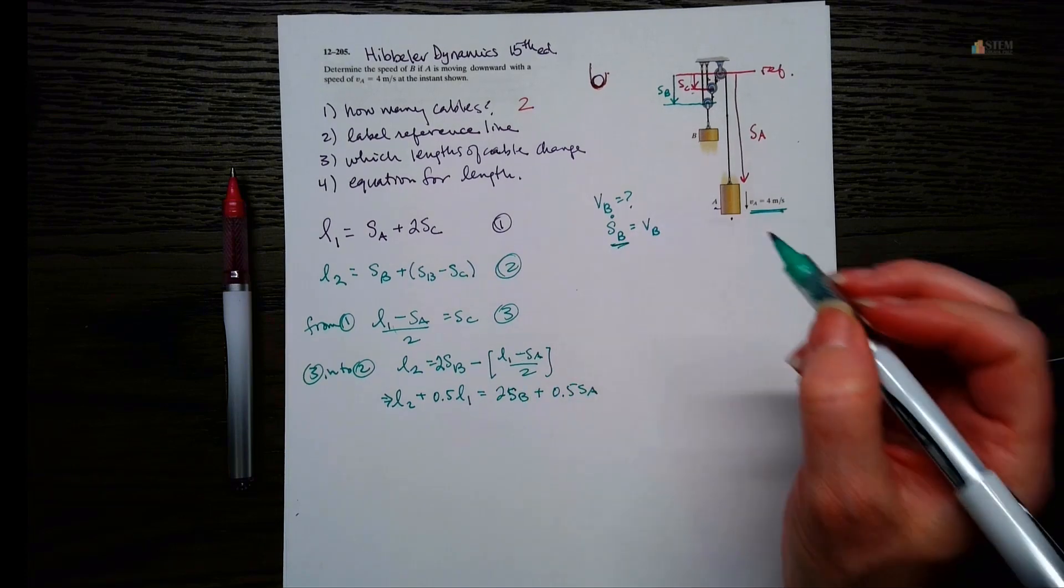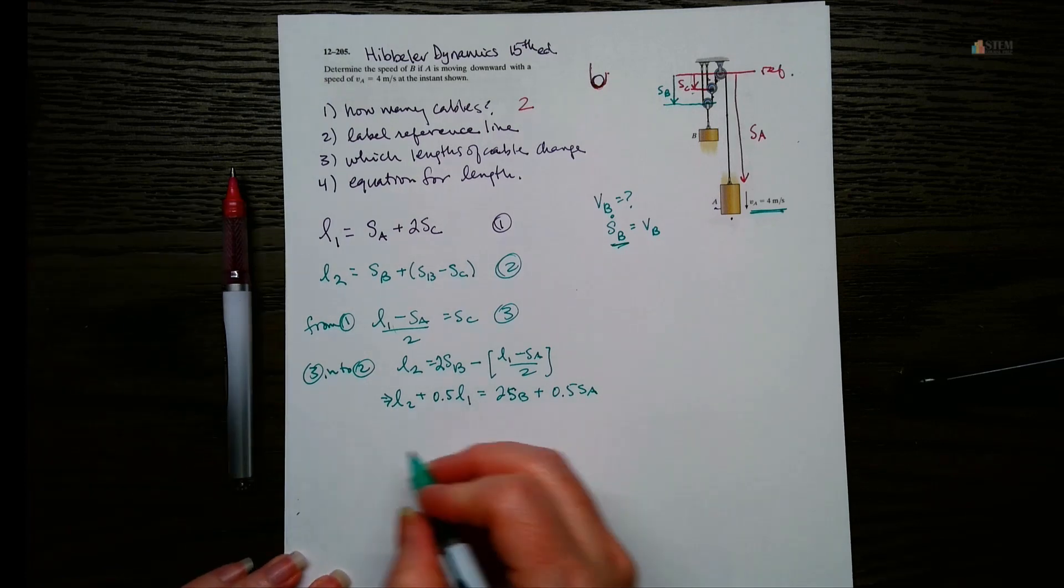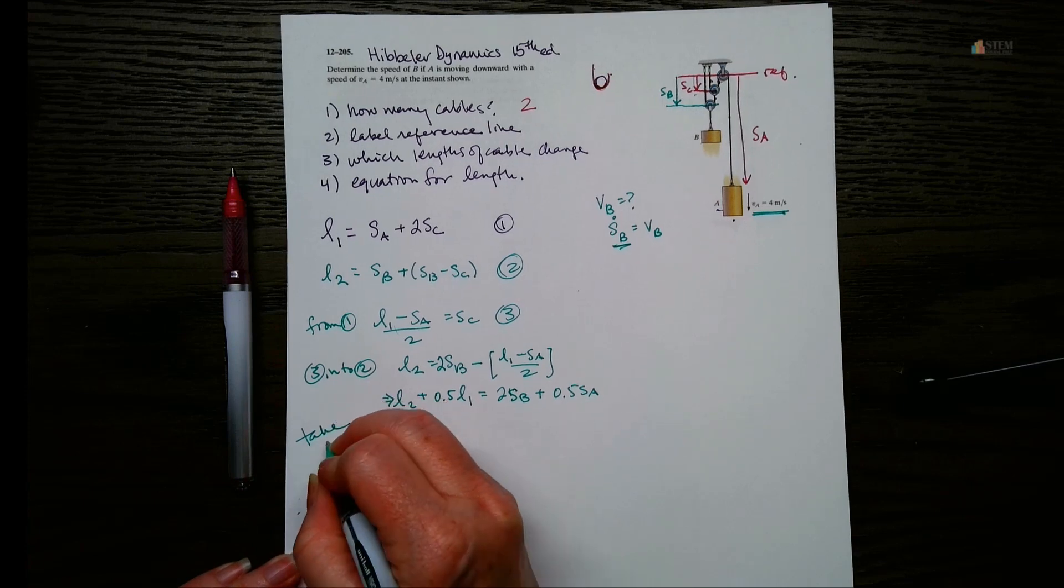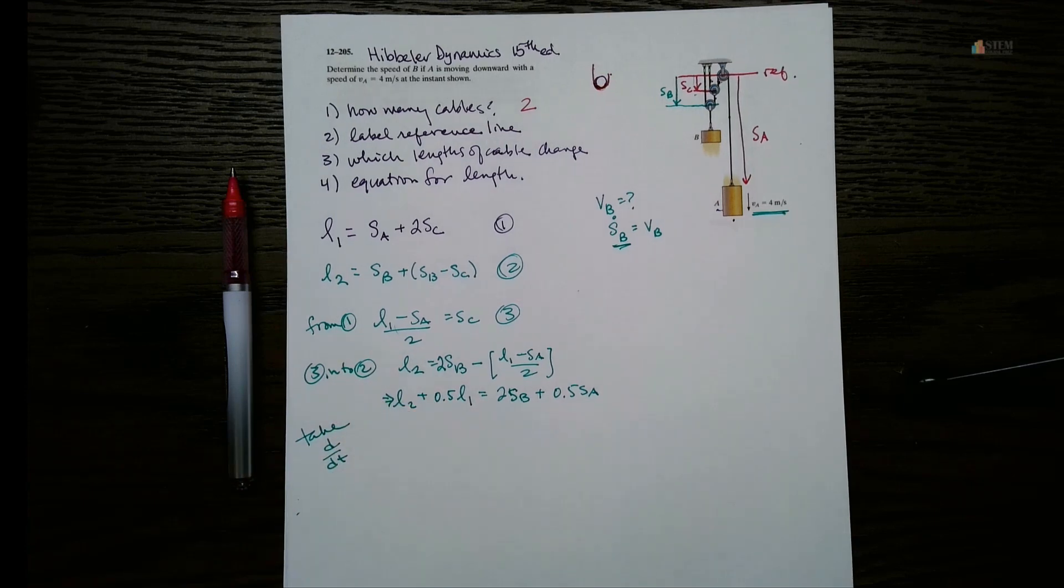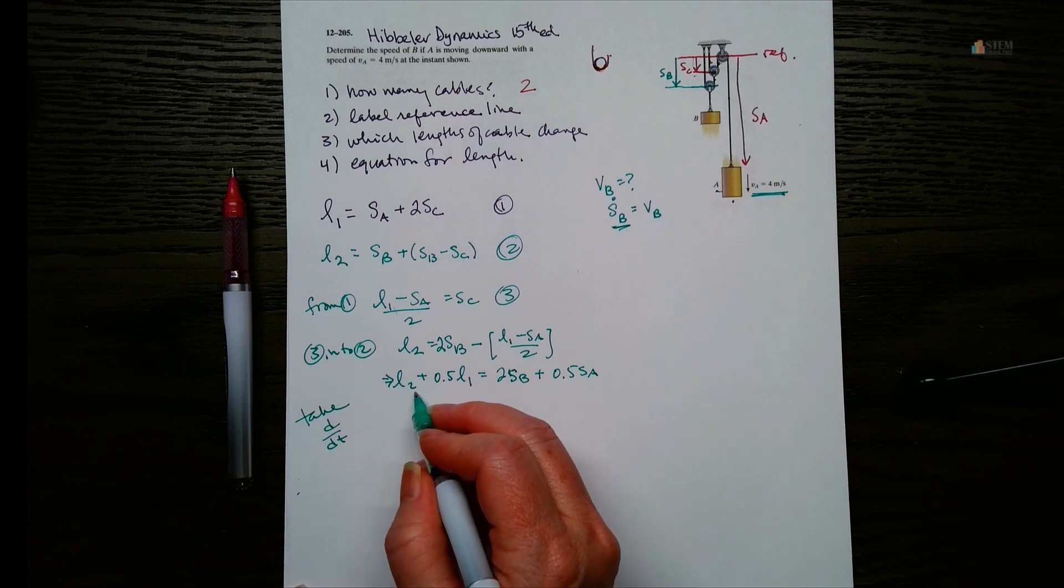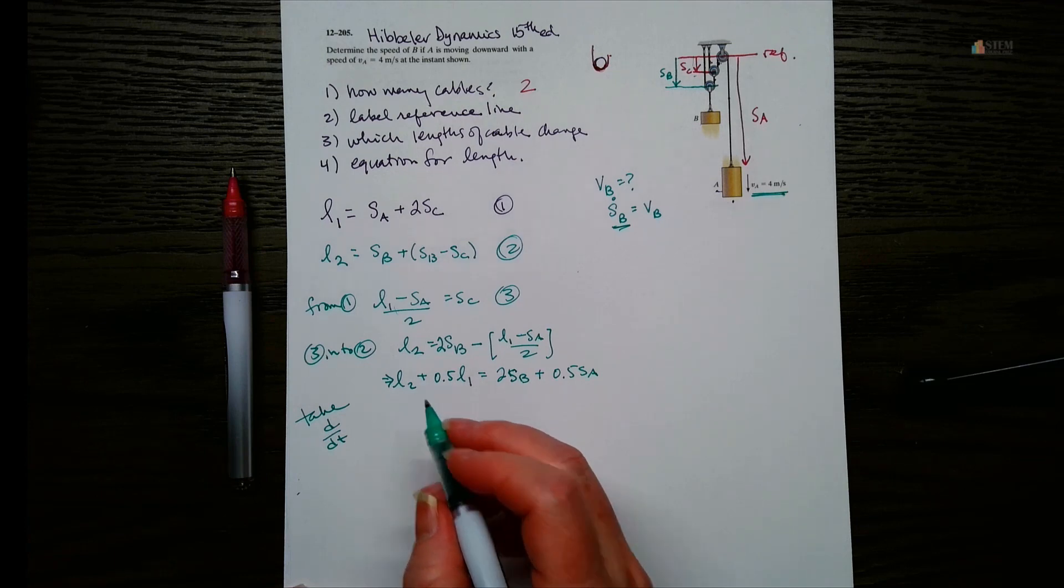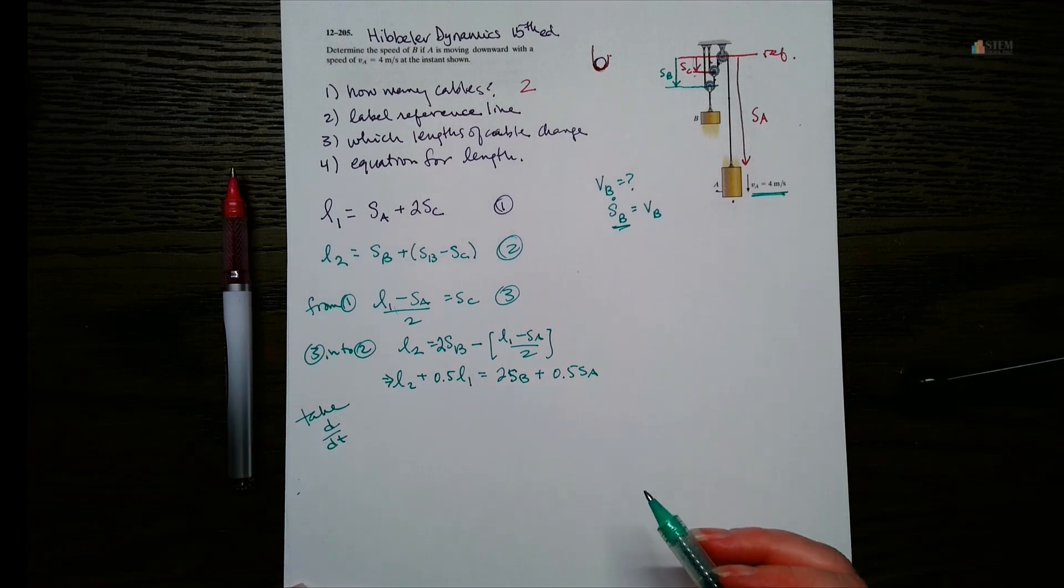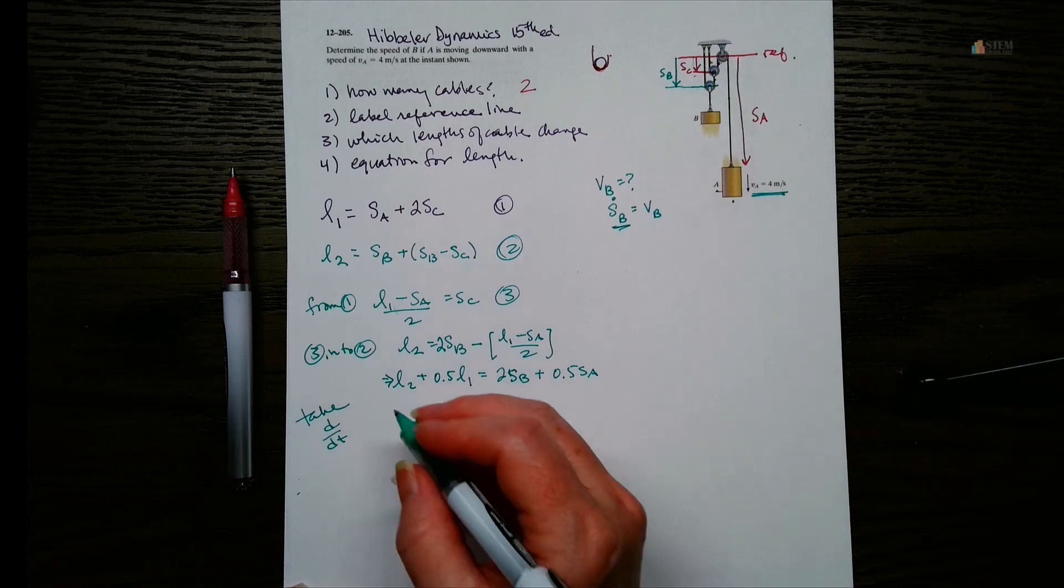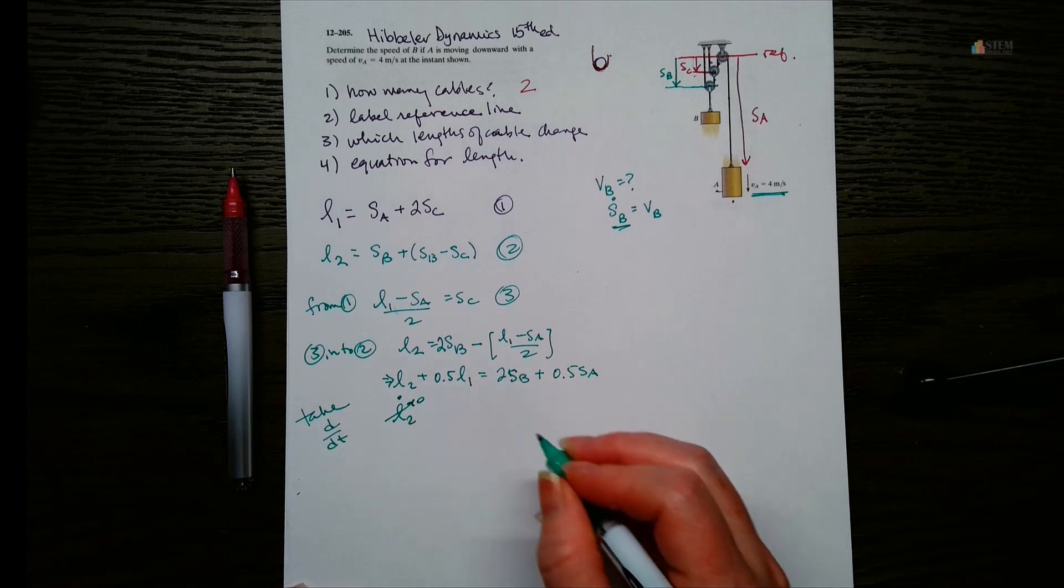So now we've got this. Now what I want to do is I want this SB dot. Okay, well, we're just going to take the derivative of this equation. And it's going to be the derivative with respect to time. Now L2, if I take the derivative of L2 with respect to time, what am I going to get? Well, I'm going to get zero, right? Because the total length for that cable is constant. That's not changing. Okay, so L2 dot, that's going to go to zero.